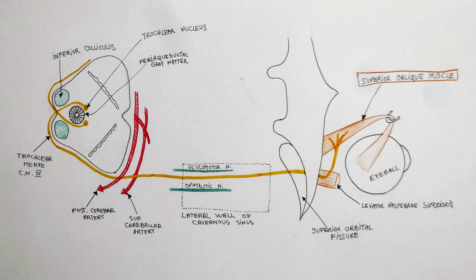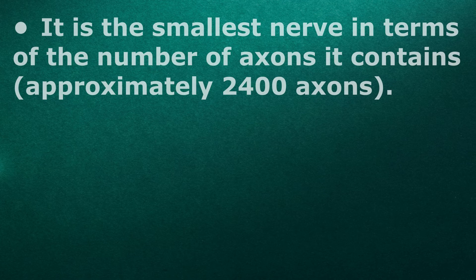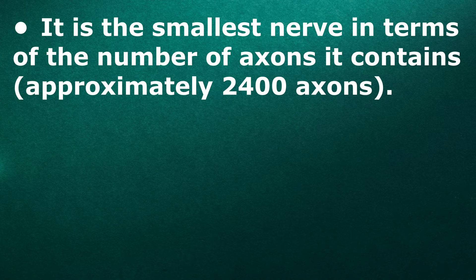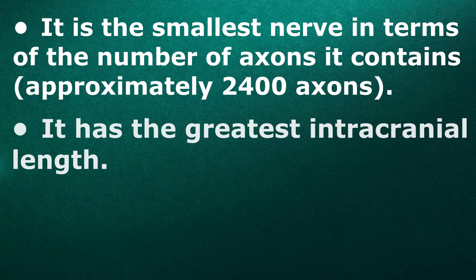The trochlear nerve is unique among the cranial nerves in several respects. It is the smallest nerve in terms of the number of axons it contains, approximately 2400 axons. It has the greatest intracranial length.